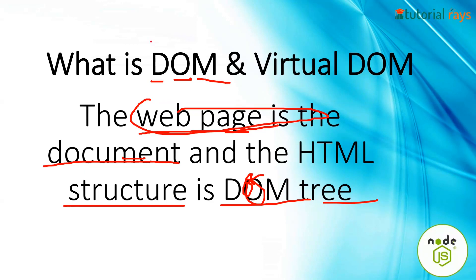There are three things: Document, Object, and Model. Object Model is the same — so mainly there are two things: the document and the object model.